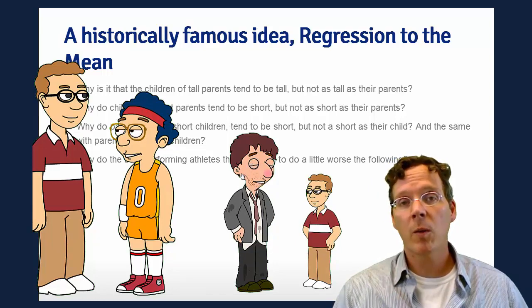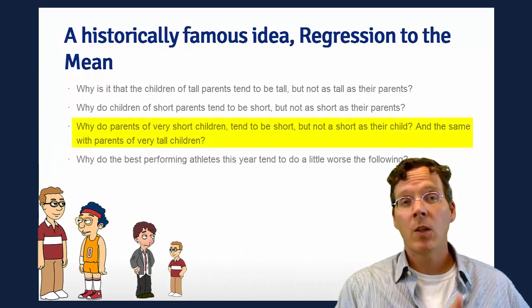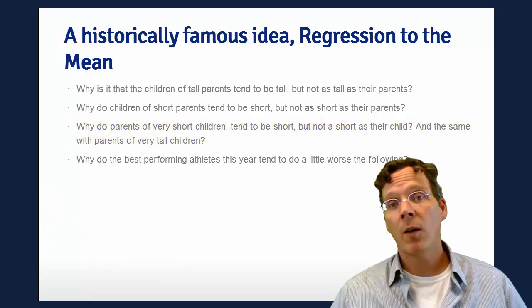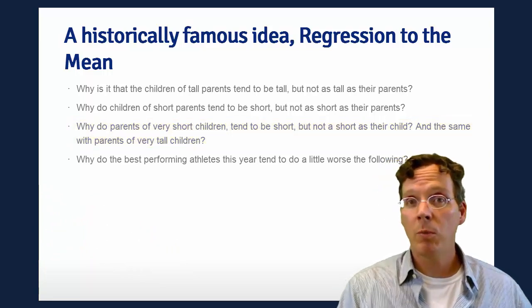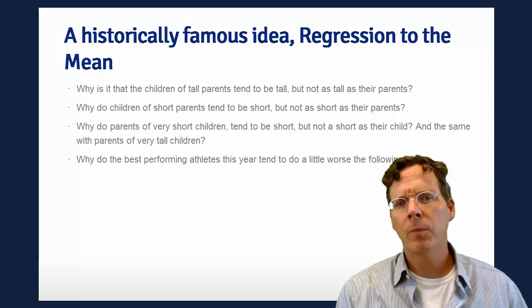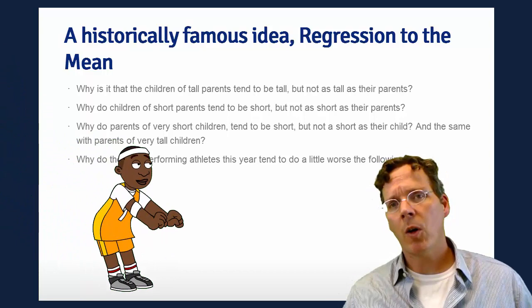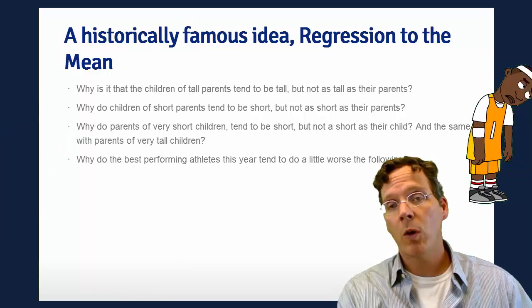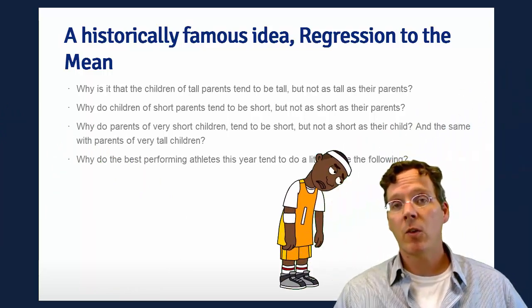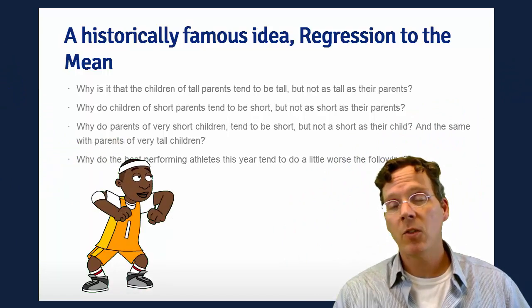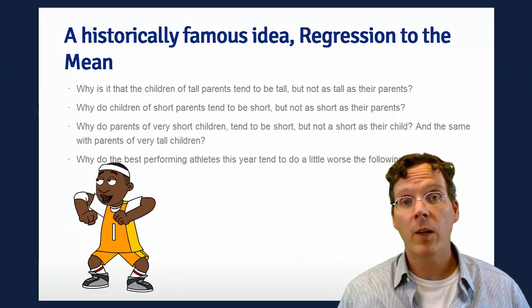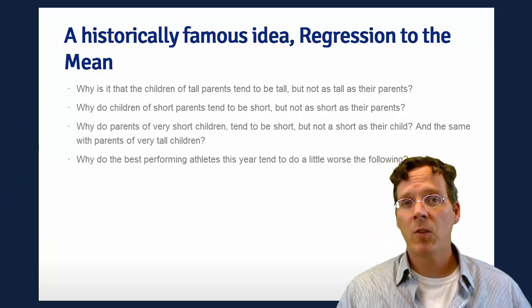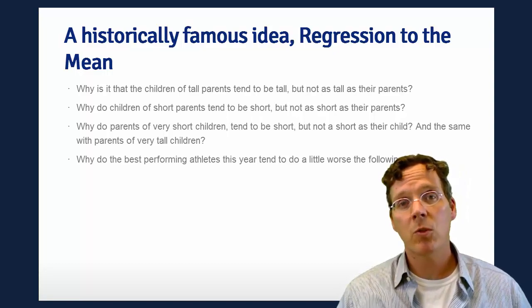We can also reverse whether we're talking about the parents and the children. Why do the parents of very short children tend to also be short, but not quite as short as their children? And why do the parents of very tall children tend also to be tall, but not quite as tall as their children? This often comes up when talking about athletes. Athletes who are the best performing one year tend to do a little bit worse the next year, and athletes that are the worst performing one year tend to do a little bit better the next year. Often people talk about stocks in the same way. We'll talk about why this is, and whether or not something is intrinsic, or whether it's a regression to the mean effect, which is the important question.